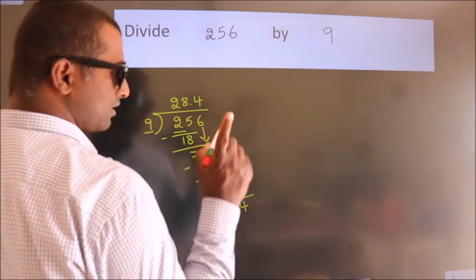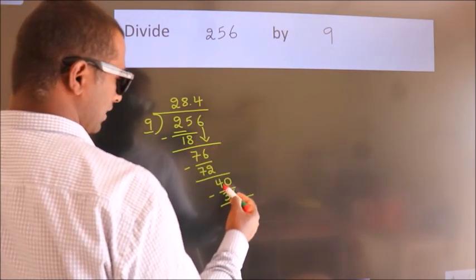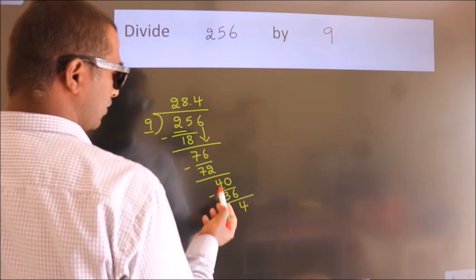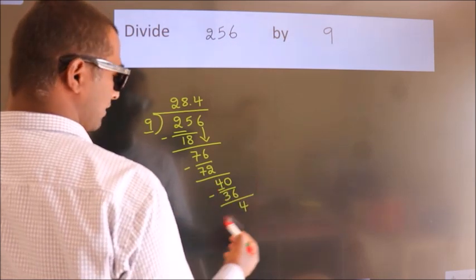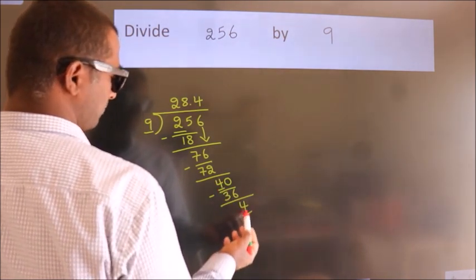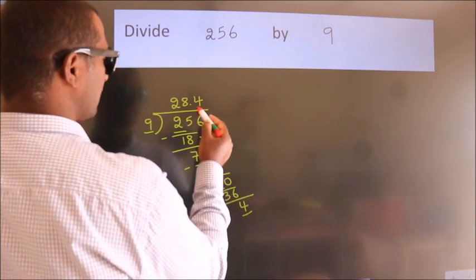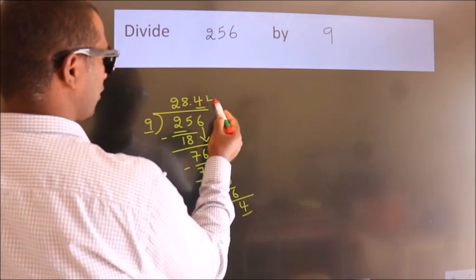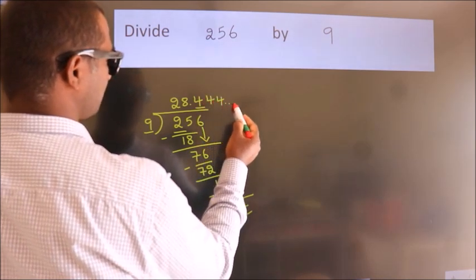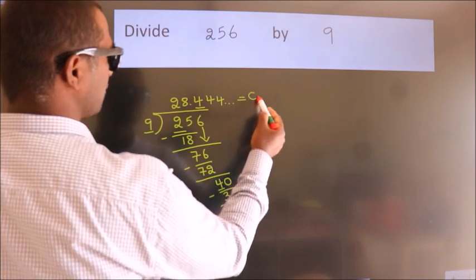Now you observe. Here we had 4 and we got 4 again. That means this number keeps on repeating. So this is our quotient.